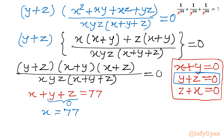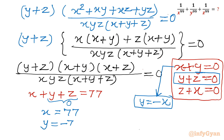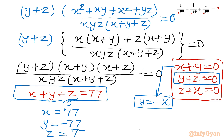From the equation x plus y equal to 0, we get y equal to minus x, so y equals minus 77. Substituting x and y into the original equation gives z equal to 77. So x equals 77, y equals minus 77, z equals 77. We can verify that the third sub-case z plus x equal to 0 would not hold true, but the other two are satisfied with these values.